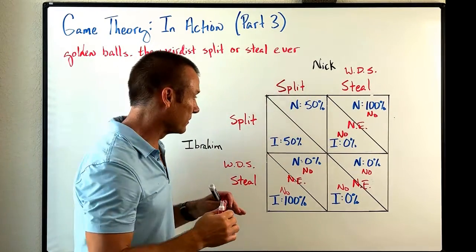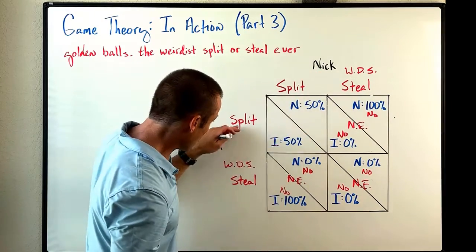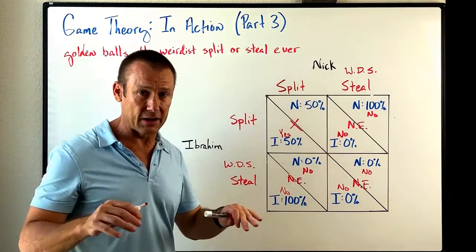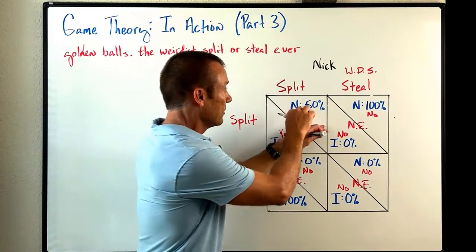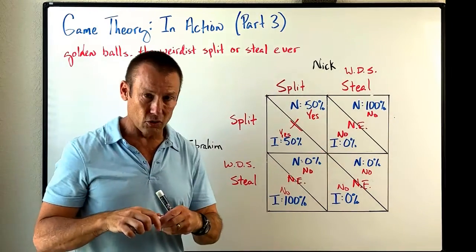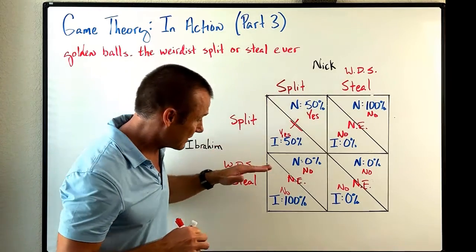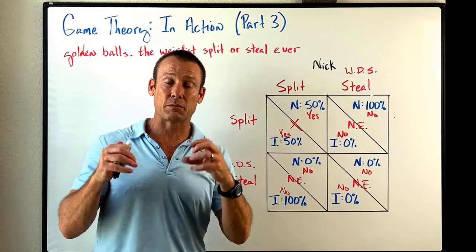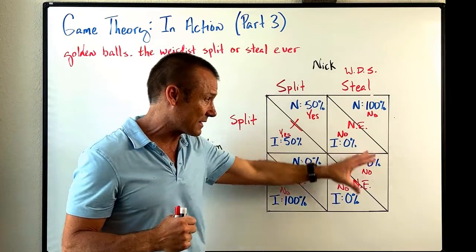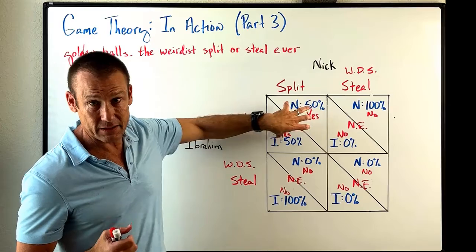Final outcome: split, split. Does Ibrahim have an incentive to switch? Given Nick played split, going from split to steal? Yes. Once we get a yes, we already know this is not a Nash equilibrium. And does Nick have incentive to switch? Absolutely yes. So Nash equilibrium is something we generally expect to gravitate toward. On average, we expect this game to yield a result in one of those three Nash equilibria — and split/split is where the game would least likely end up. That makes a lot of sense.